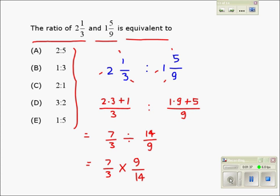Let us cancel terms. 3 cancels 9 as 1 and 3. 7 cancels 14 as 1 and 2. So we are left with 3 over 2.